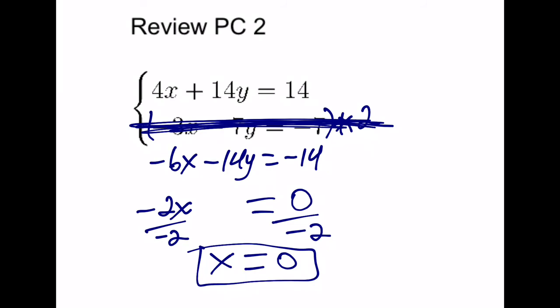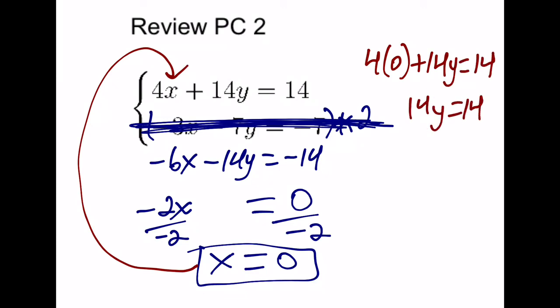I can pick any of my original equations. Let's say I chose this top one. If I plug in 0 here for x, I have 4 times 0 plus 14y is equal to 14. Which means 14y is equal to 14. And when I divide both sides by 14, I get y is equal to 1.